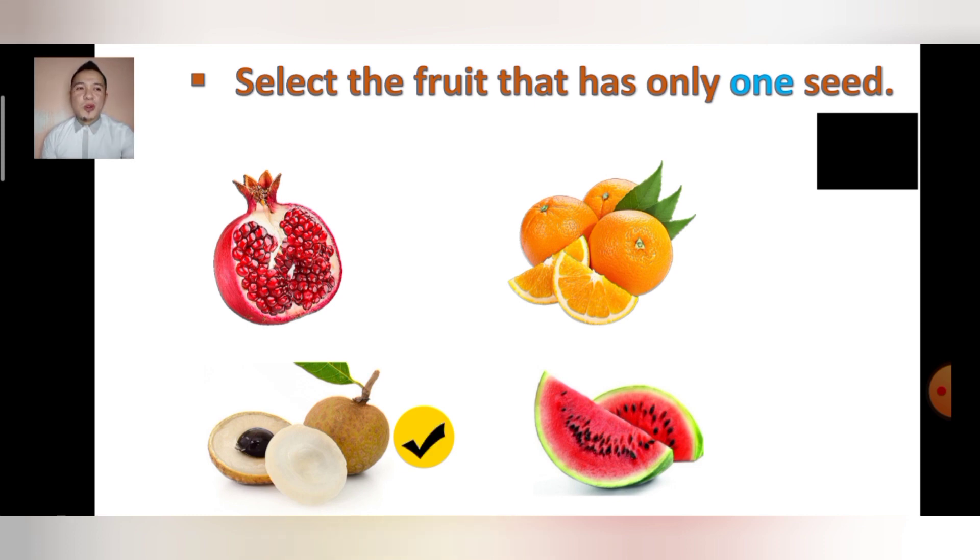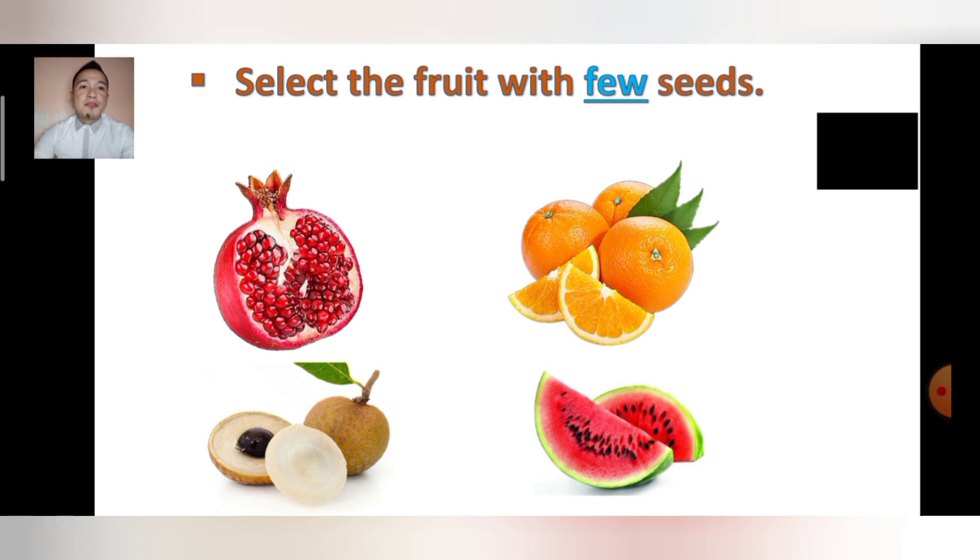Next, select the fruit with few seeds. Ready, go. Five, four, three, two, one. All right, so we are going to omit the longan because longan has only one seed. Now you choose - it's either pomegranate, watermelon, or orange. What would be your answer? Ready, go. Great job, it's orange. Orange has few seeds.